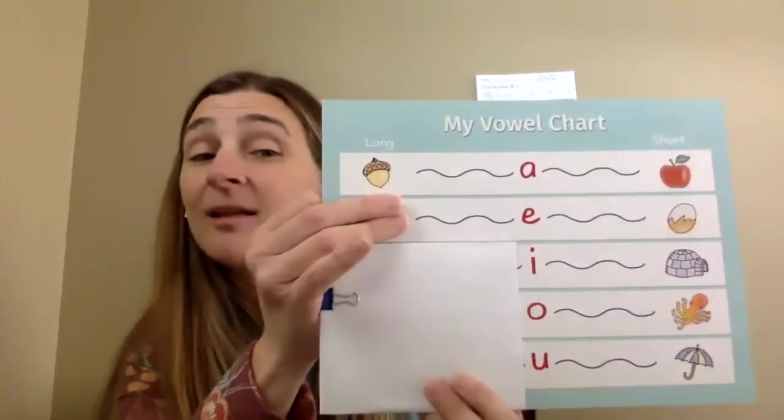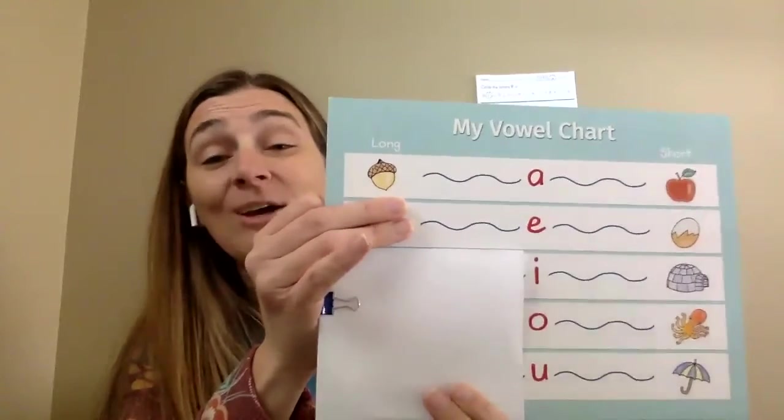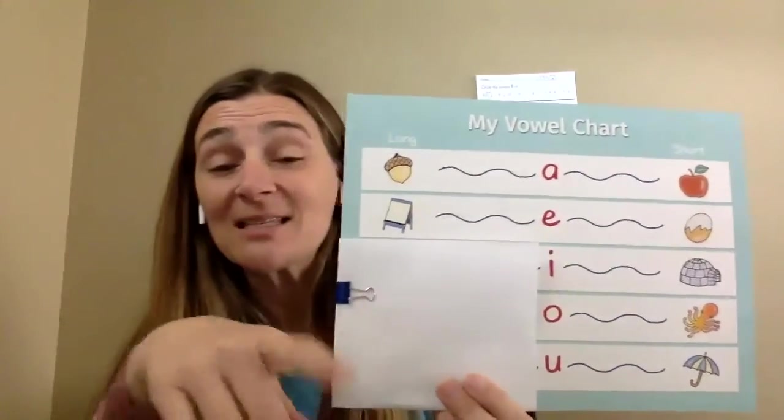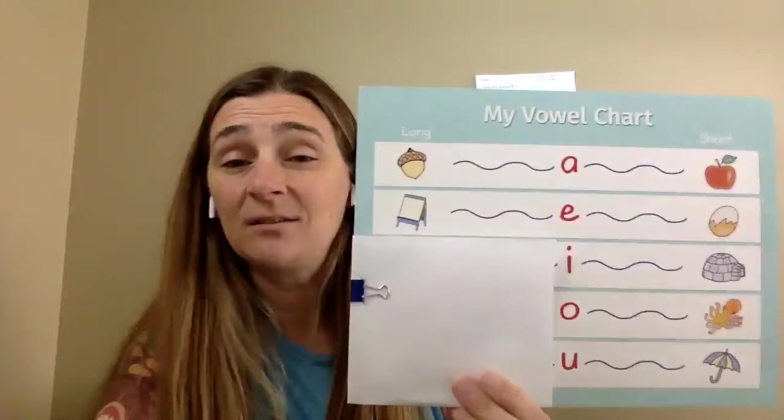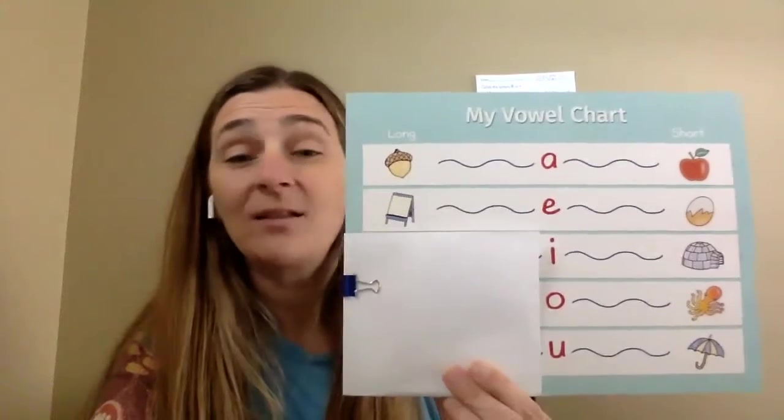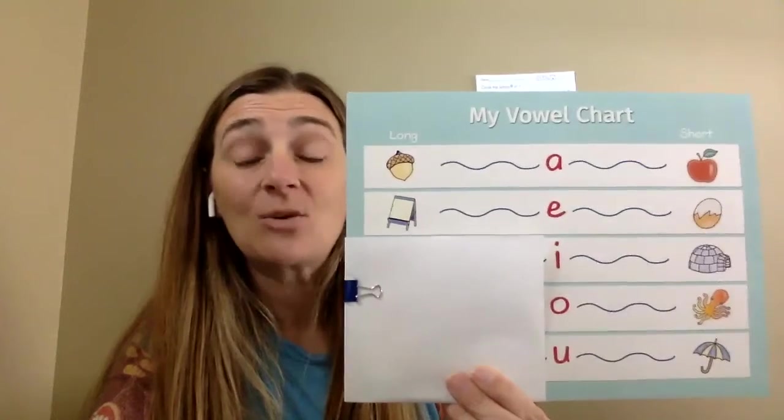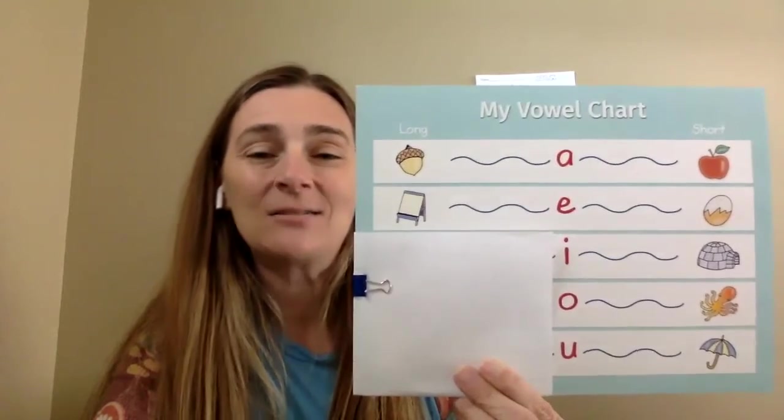Now today we're going to talk about E. We know that short vowel E says E for egg. But look at this. So this is a picture of an easel. When we are listening for a long vowel E sound, it's going to say E like easel.